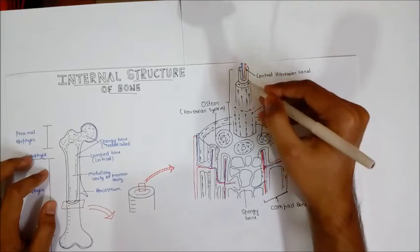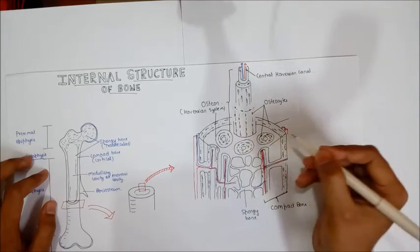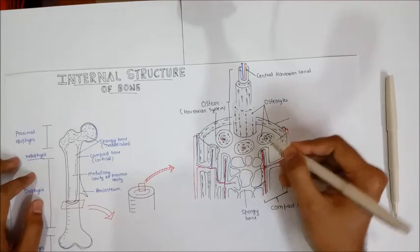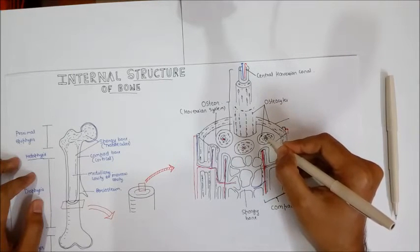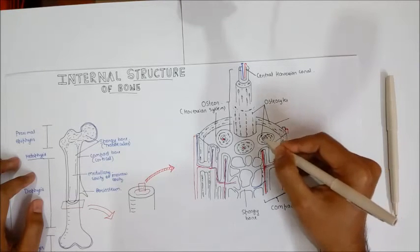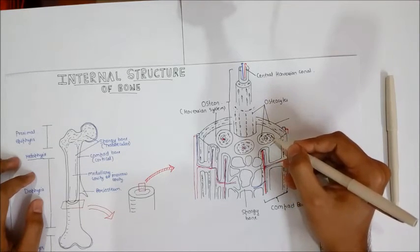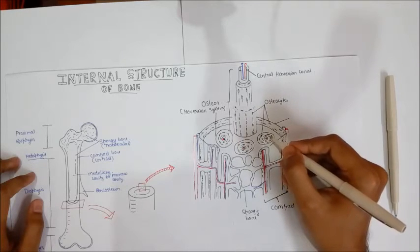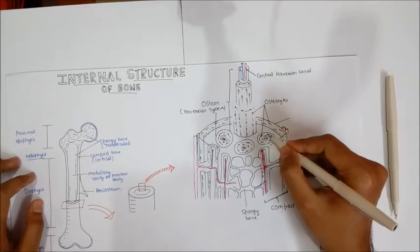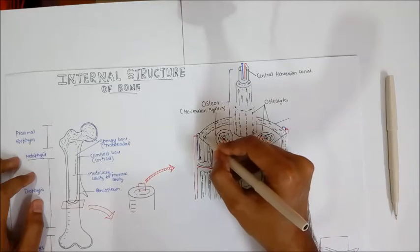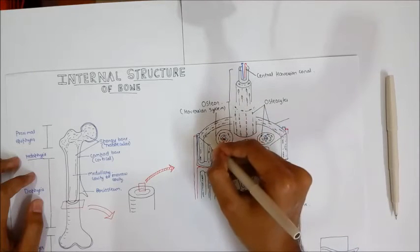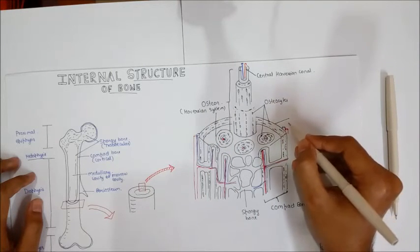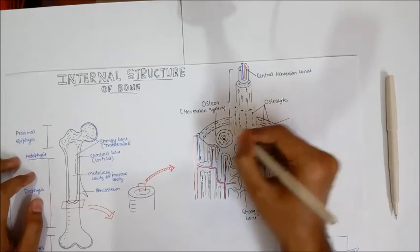Surrounding the central Haversian canal are the concentric lamellae — the bony matrix arranged in parallel, concentric layer-like structures. There is also a layer covering the circumference called the circumferential lamellae; since it is on the outer side it is called the outer circumferential lamellae. The outer membrane you can see here is the periosteum.